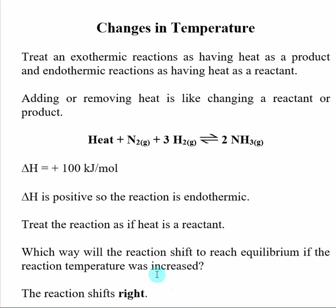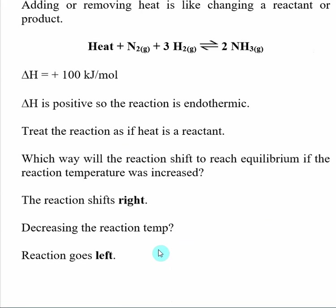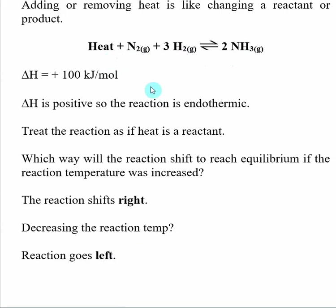If we increase the reaction temperature, the reaction shifts to the right. And the exact opposite is true — if I decrease the reaction temperature, we're going to want to shift in the direction that produces heat. So if we go to the left, we use up ammonia, we make hydrogen, we make nitrogen, and we also generate heat. So if we decrease the reaction temperature, the reaction shifts to the left because that is the direction that produces heat.